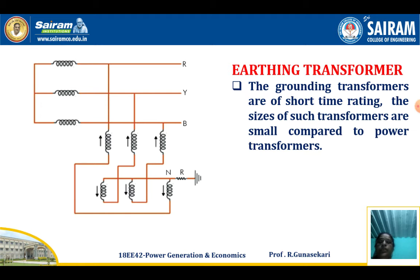In the diagram, R, Y, B — that is the star connected transformer. The grounding transformers are of short time rating; the size of such transformers is small compared to a power transformer. The neutral point is connected to the earth through resistance only.